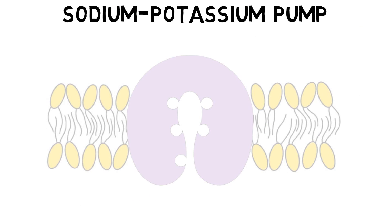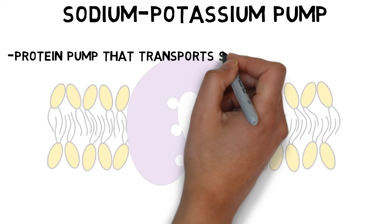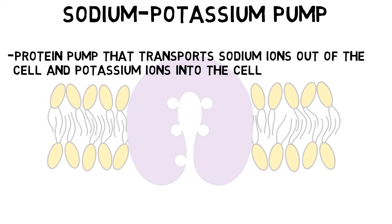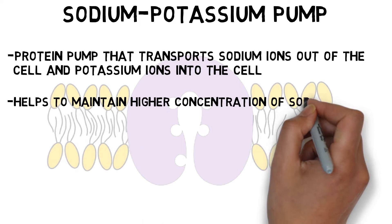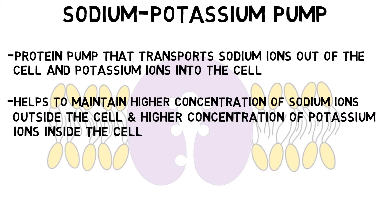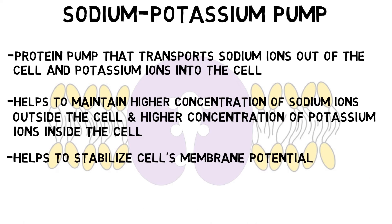The sodium-potassium pump is a protein pump found in the cell membrane of all animal cells. Its main function is to transport sodium ions out of the cell and potassium ions into the cell. This serves a number of purposes, but is critically important to the function of neurons, as it helps to maintain a higher concentration of sodium ions outside the cell and a higher concentration of potassium ions inside the cell. Preserving these differences in ion concentrations helps to stabilize the cell's membrane potential.